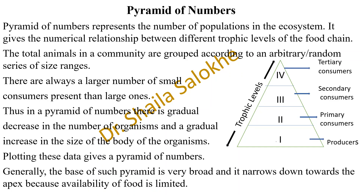Regarding the pyramid of numbers, it represents the number of populations in the ecosystem. It gives the numerical relationship between different trophic levels of the food chain. In a broad sense, the number of populations in an ecosystem is represented in pyramidal numbers — showing how many producers are present as compared to consumers in a given ecosystem.